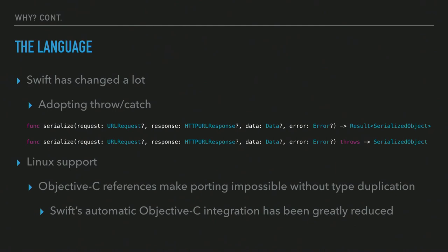So why did we decide to rewrite a very successful library with hundreds of thousands of apps using it? Well, Swift has changed a lot — even in the beta period it changed significantly from 1 to 2, and especially 2 to 3. There were a lot of things we needed to do that hadn't been done. We needed to catch up with the language, adopting throw and catch for error handling. Previously we had this result type to always encapsulate error handling behaviors of the library.